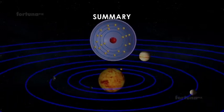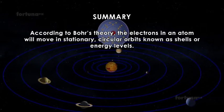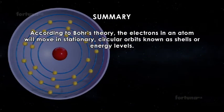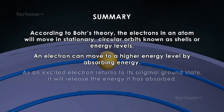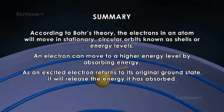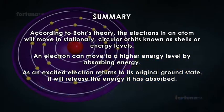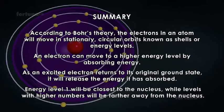Summary. According to Bohr's theory, the electrons in an atom will move in stationary circular orbits known as shells or energy levels. An electron can move to a higher energy level by absorbing energy. As an excited electron returns to its original ground state, it will release the energy it has absorbed. Energy level 1 will be closest to the nucleus, while energy levels with higher numbers will be farther away from the nucleus.